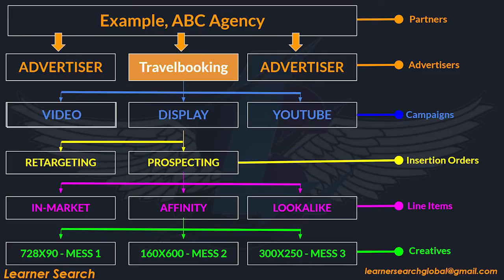Let's take another example. Travel Booking is another advertiser under the same ABC agency. This advertiser wants to run video, display, and YouTube campaigns. They created one IO for prospecting and one IO for retargeting. They want to run three different audience segments — in-market, affinity, and look-alike — so they created three line items for each one under the prospecting strategy. They created one line item per audience segment to monitor performance, and for each line item, they want to run three different creatives with different ad sizes and ad messages. Three creatives are created at the advertiser level and assigned to each line item.